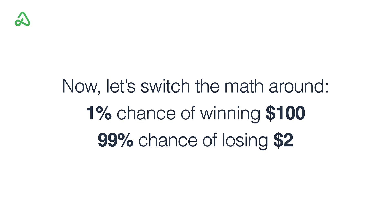Now let's switch the math around — this is where it gets really interesting. All trading in probabilities and investing is based on this math. Let's assume a more lottery-type game where you have a 1% chance of winning $100 — an asymmetric bet where you have a small chance of winning big. That's what a lot of traders try to go after: small trades, lottery tickets where they try to win really big. So there's a 1% chance of winning $100 and a 99% chance of losing $2.